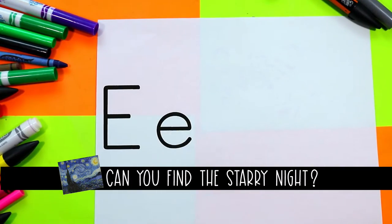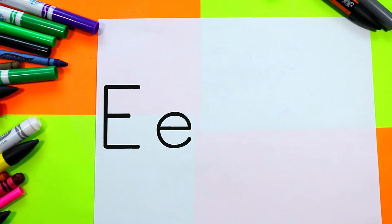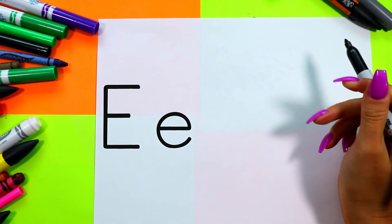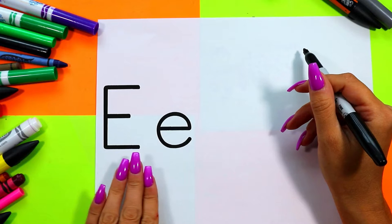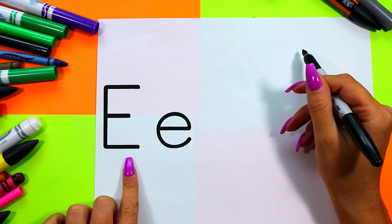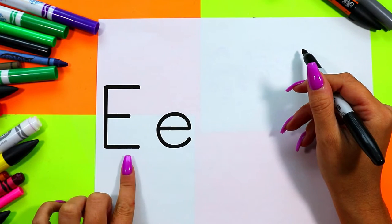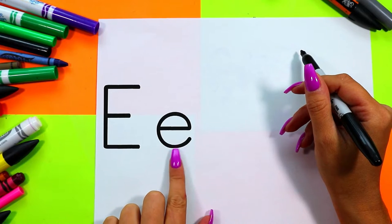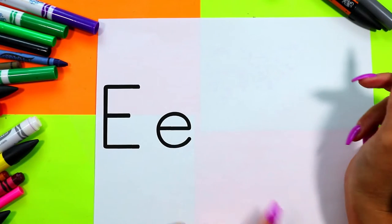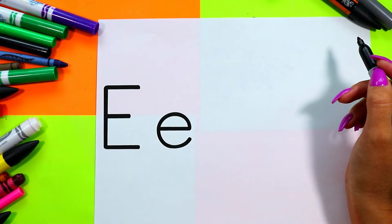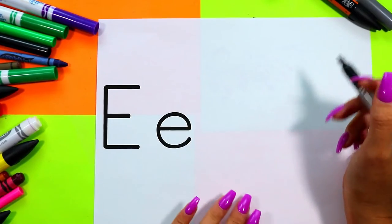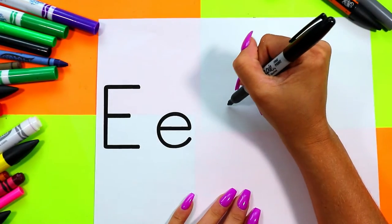All right, we're going to begin by drawing our elephant, and we're drawing an elephant because the word elephant starts with the letter E. This is an uppercase E and this is a lowercase E. The word elephant starts with E, so we're going to draw.